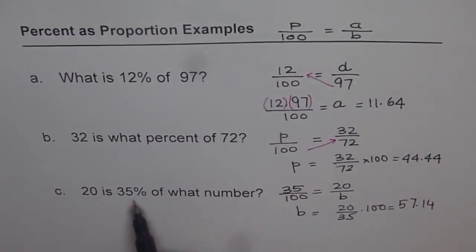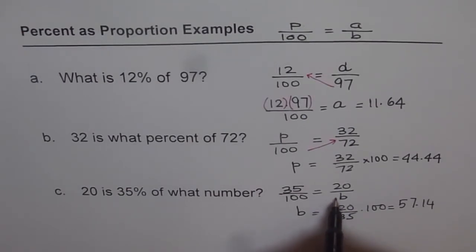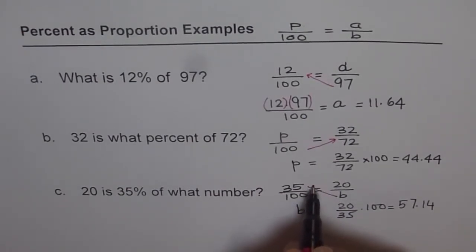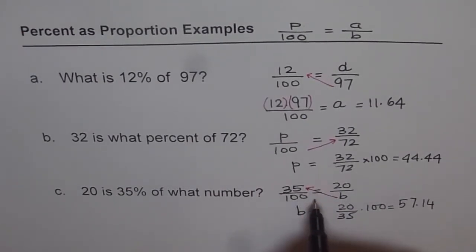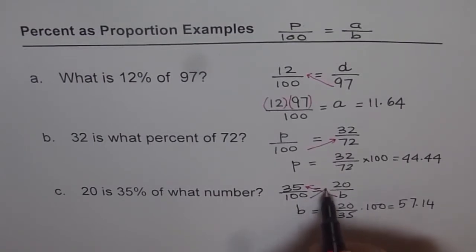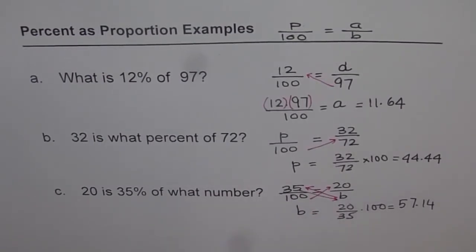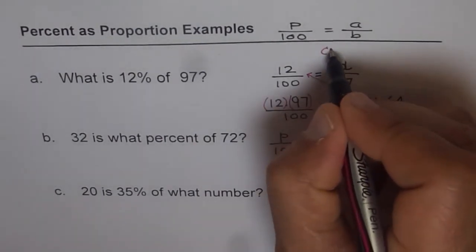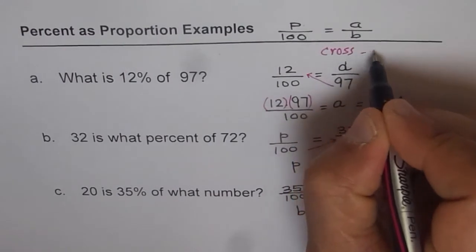20 is 35% of what number? So 20 is the part amount given to us. We don't know the whole. So 20 over b becomes the fraction part. And 35% is the percent, something over 100. To find b, this is kind of tricky. Cross multiply. Get b here and then bring this 100 there and 35 back to b place. So cross multiply is the strategy. Remember this. Cross multiply.